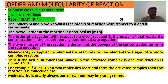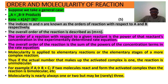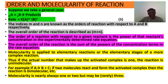Regarding order and molecularity: for a reaction A + B → products with stoichiometric coefficients m and n, the rate = k[A]ᵐ[B]ⁿ. The indices m and n are the orders of reaction with respect to A and B respectively. The overall order is m + n. The order with respect to a reactant is the power of its concentration in the experimentally determined rate equation.